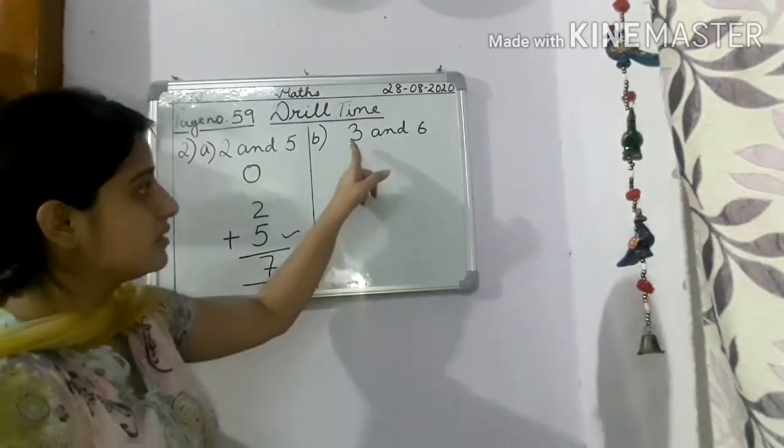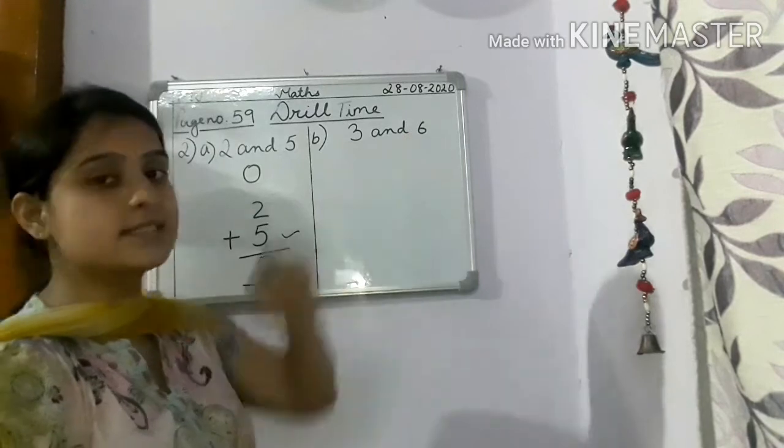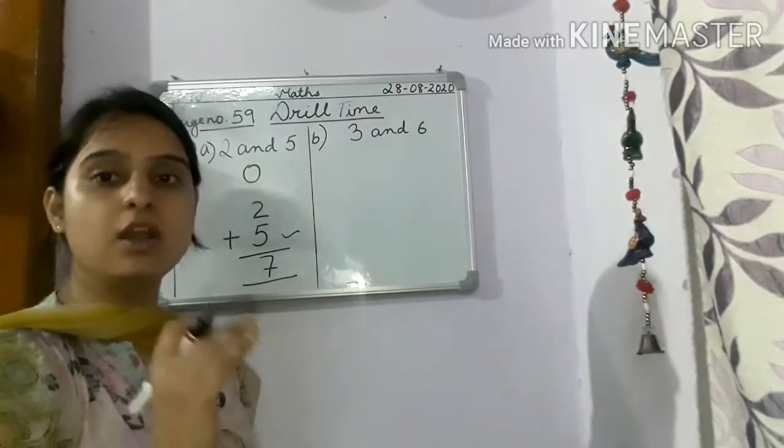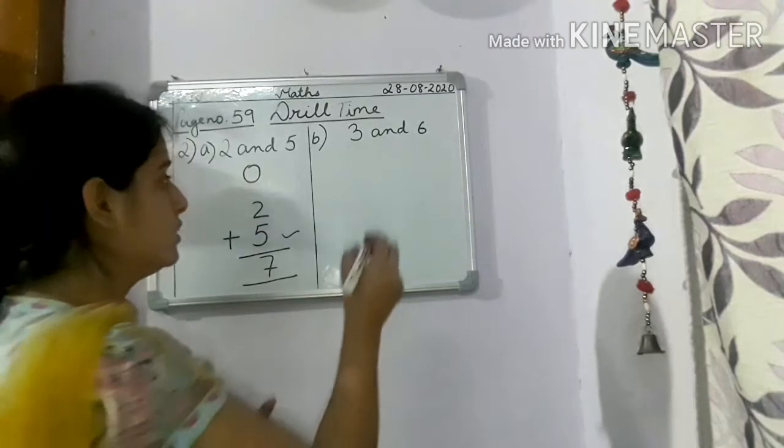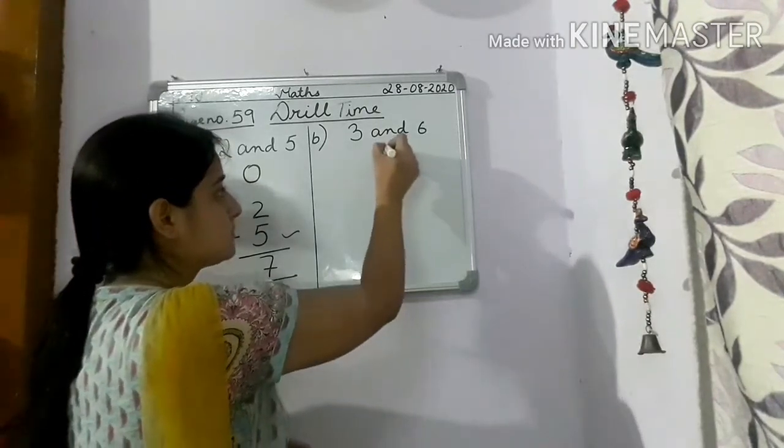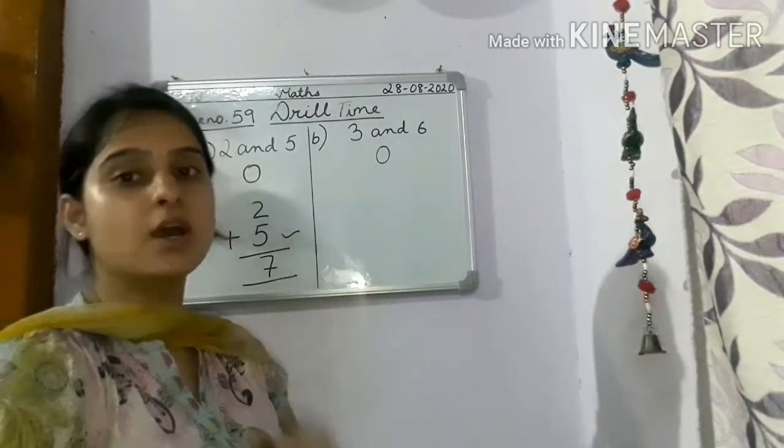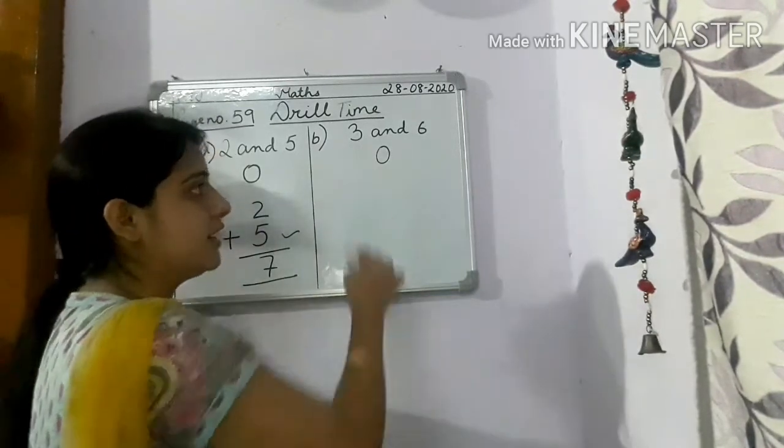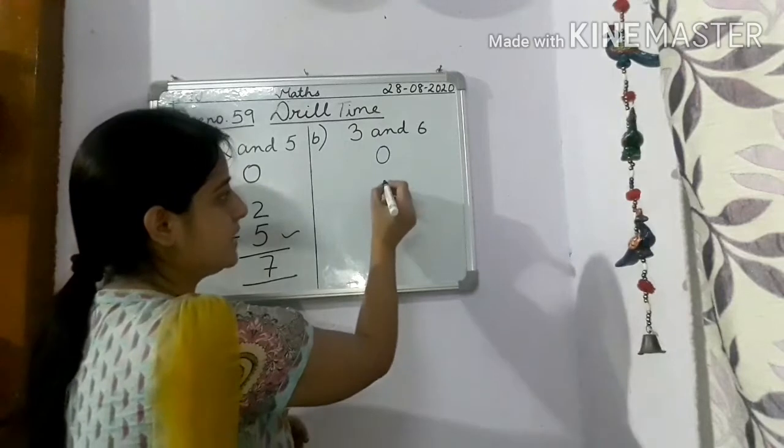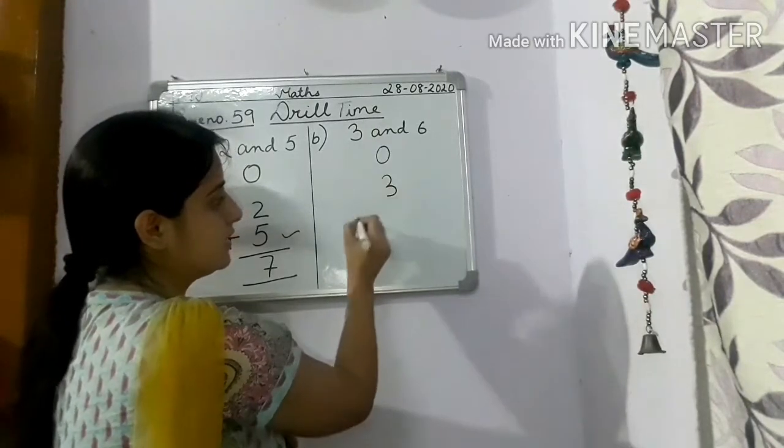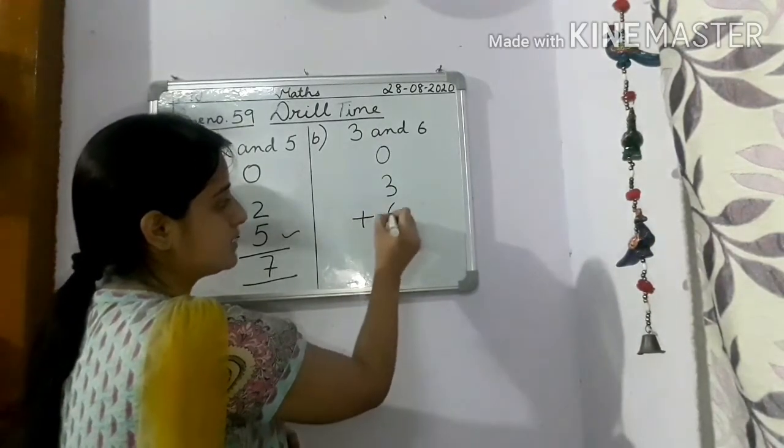Next, add 3 and 6 using the vertical or column method. So children, this is one digit number. Will come under which place? One's place. So now we will arrange this vertically under one's place. 3 plus 6.